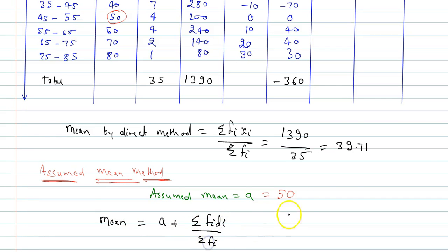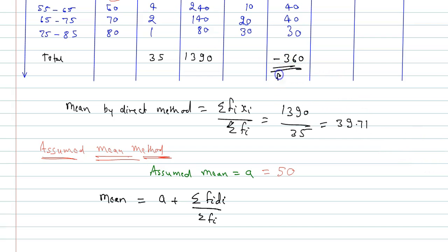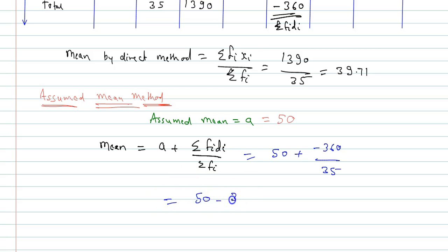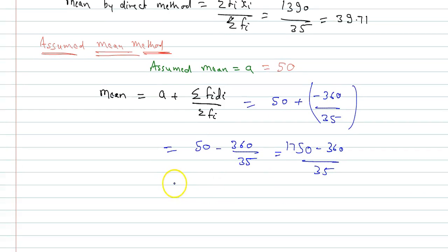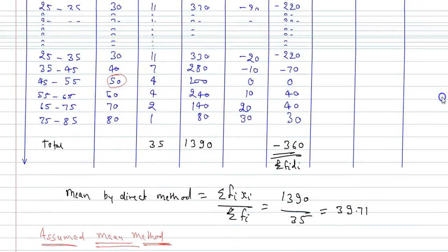By the assumed mean method, mean = a + (ΣFiDi / ΣFi) = 50 + (−360 / 35) = 50 − 10.29 = 39.71. This confirms the same mean as the direct method.